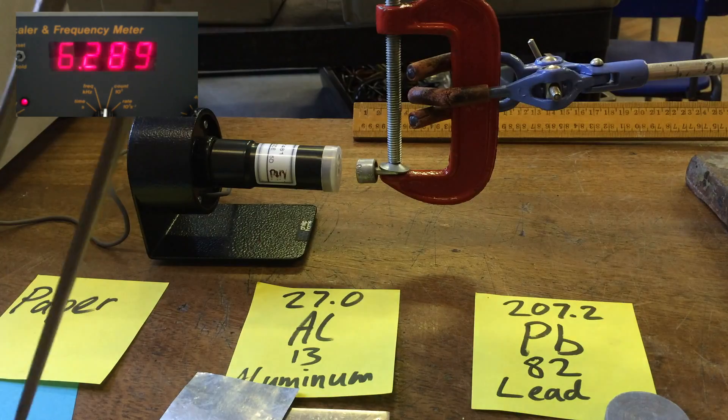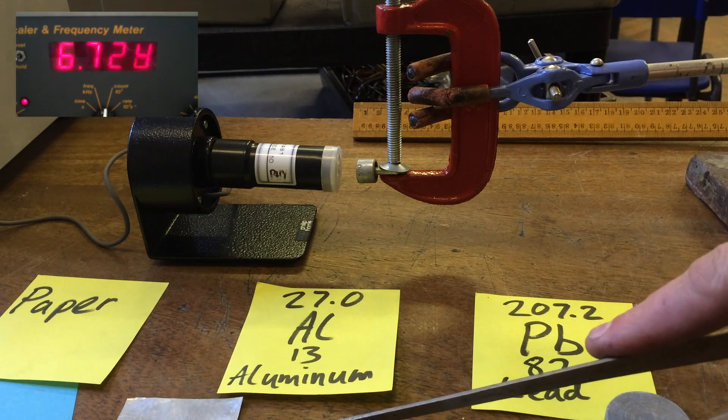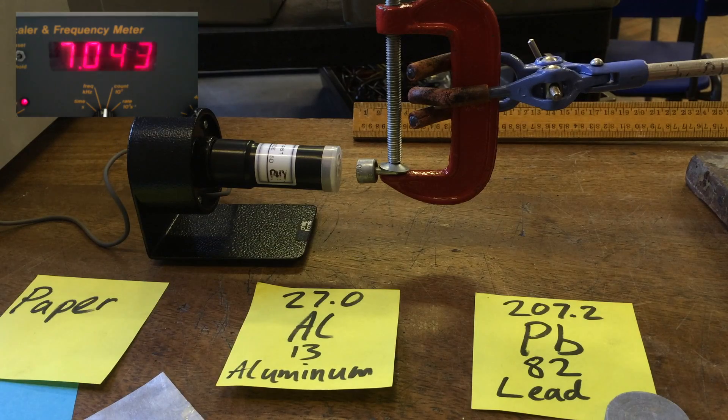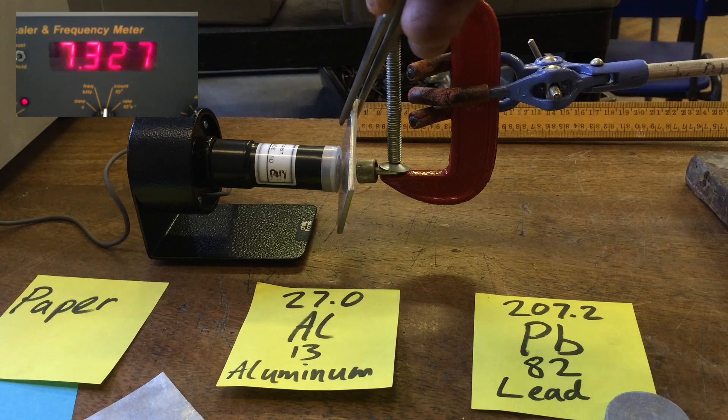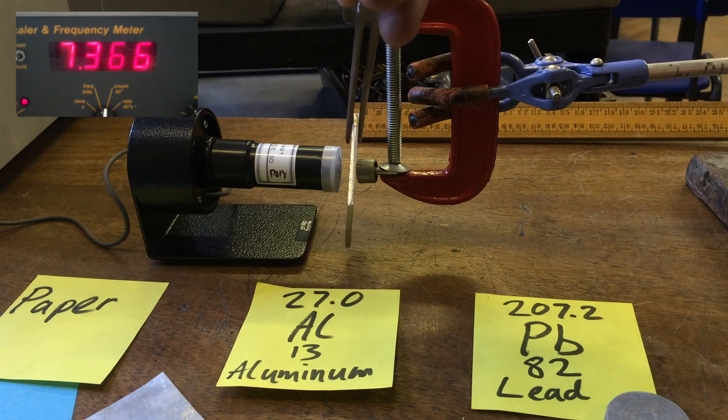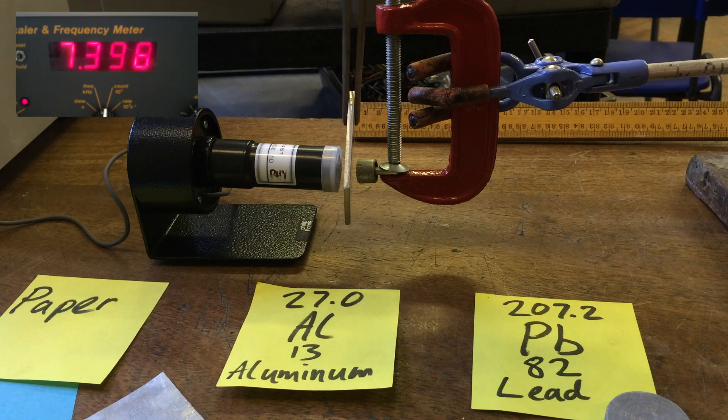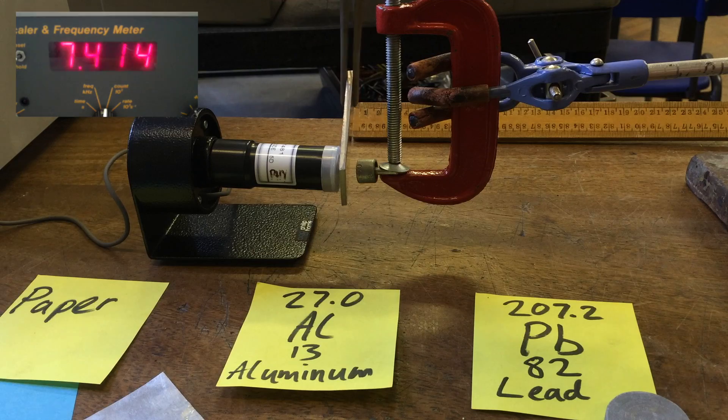Let's try a slightly thicker piece of aluminum now. We've got our thicker piece of aluminum, and it's only thicker aluminum that stops beta particles. Again, that shows that they're far more penetrating than alpha particles.